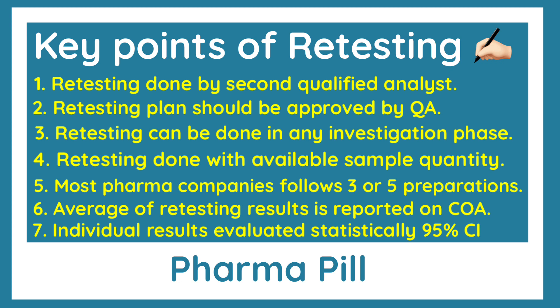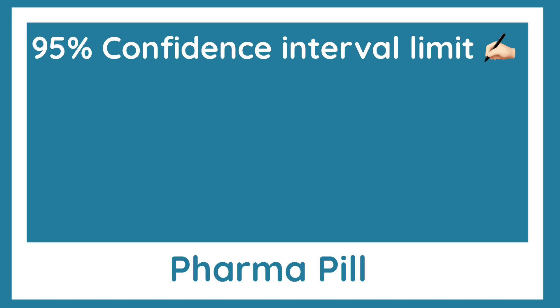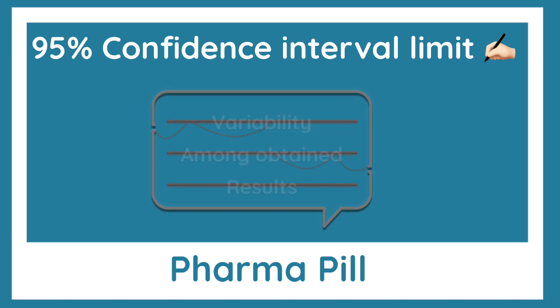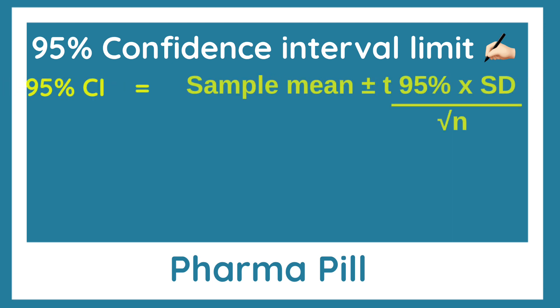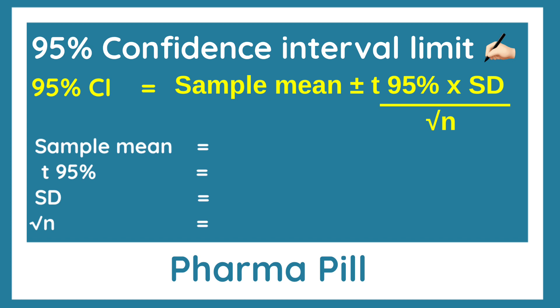The question arises: what is the 95% confidence interval limit and how is it calculated? The 95% confidence interval limit tells about the variability among the obtained results, and it can be calculated with the help of this formula: 95% confidence interval limit = sample mean ± T95% × standard deviation / √n. There are four components in this formula.